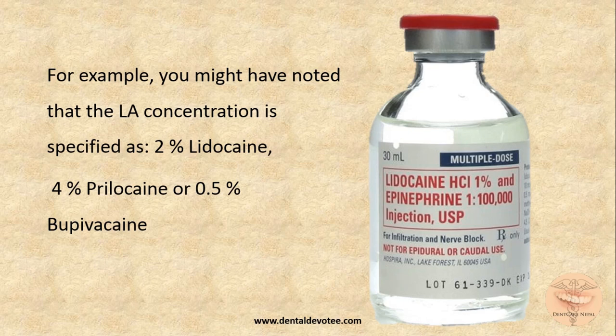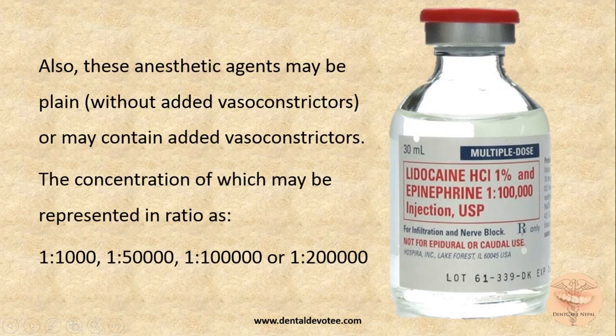In this case you can see here it is lidocaine HCL 1% and epinephrine 1:100,000 concentration, and this 30 ml vial is for multiple doses. Anesthetic agents may be plain — that is, without any vasoconstrictors — or they may contain added vasoconstrictors. The concentration of vasoconstrictors is represented in ratios such as 1:1000, 1:100,000, 1:50,000, or 1:200,000.